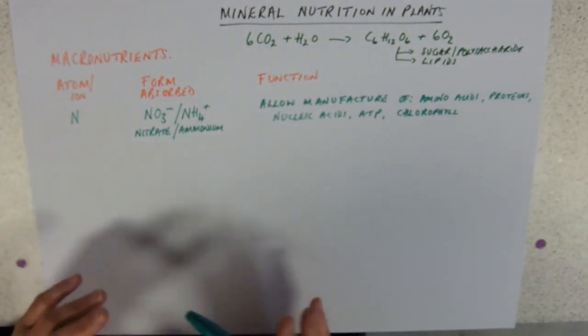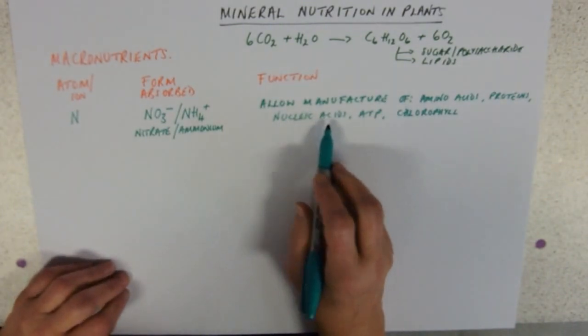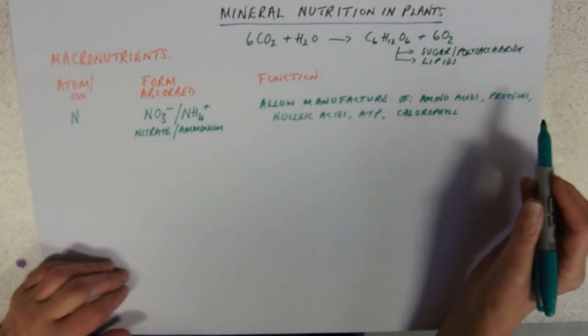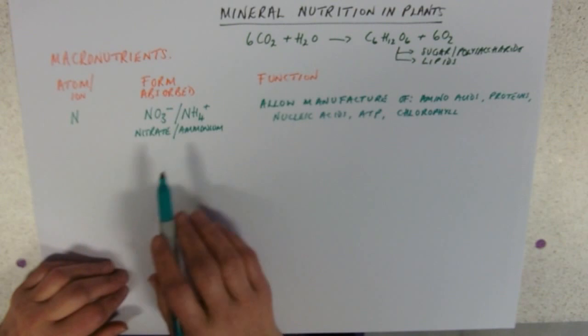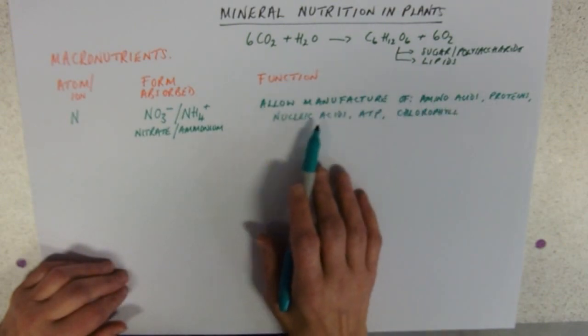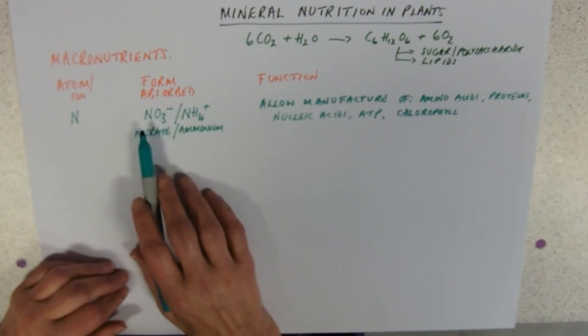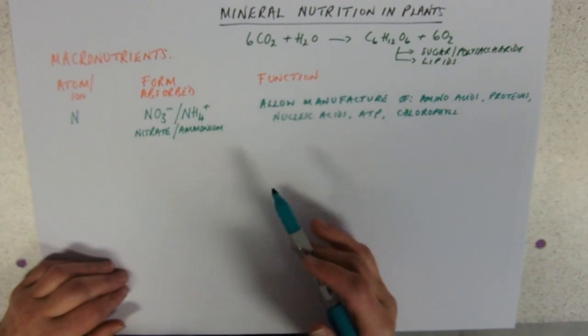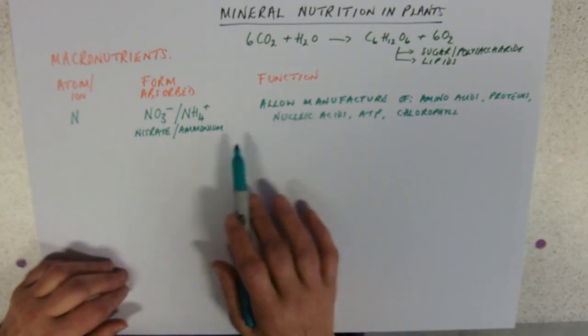If you don't have any nitrogen, then you can't make nucleic acids to do cell division with and you can't make proteins to make new cell chemicals. Therefore its major effect, a lack of nitrate in the soil will cause very stunted growth. This is why farmers add nitrogen fertilizers onto the soil to encourage the plants to be able to make more amino acid proteins, do more cell division.